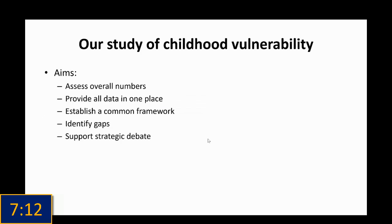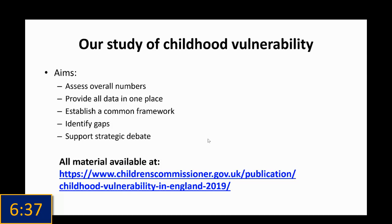In order to answer these two questions, we launched, three years ago, our annual study of childhood vulnerability, which aims to assess the numbers of how many children we think are vulnerable, provide all of the data in one place, establish a common framework for government, academia, researchers, and other institutions to use, identify gaps in data and also in services and support, and to support debate on the really big strategic questions for local and national governments — like do we have enough resources and structures in place to support vulnerable children. All of the material is available on our website. This is all pre-coronavirus — retrospective data — but it's still relevant, and I'll explain how at the end.